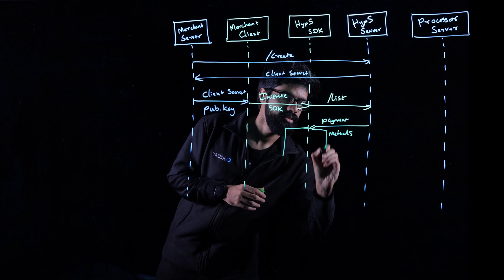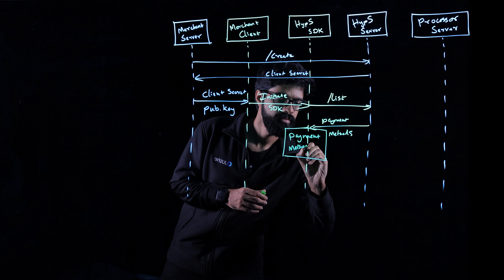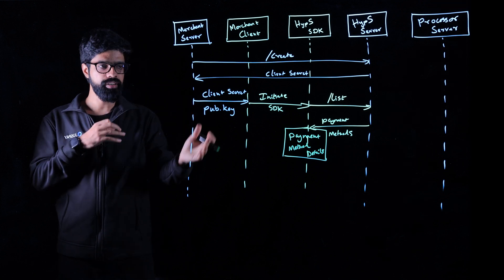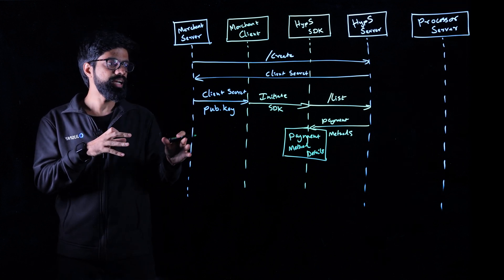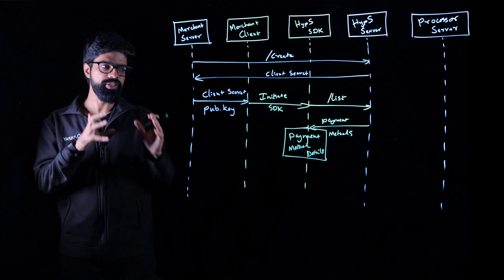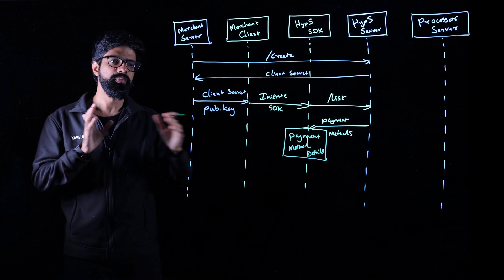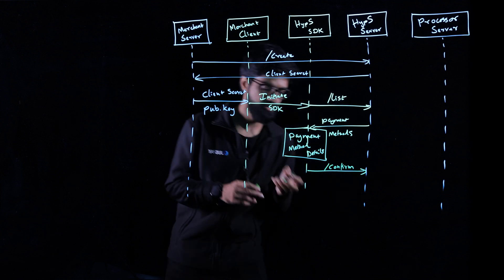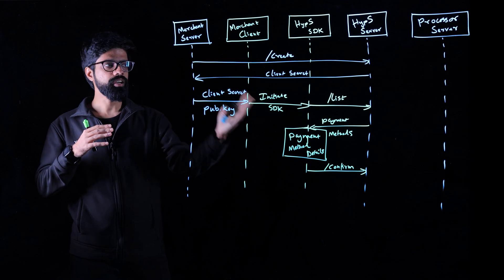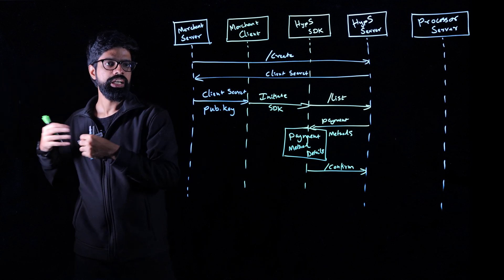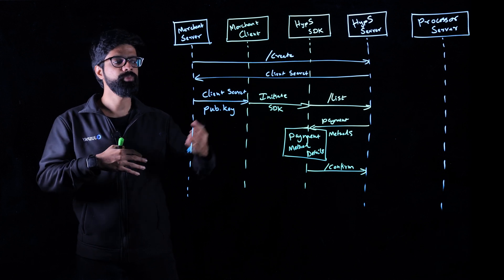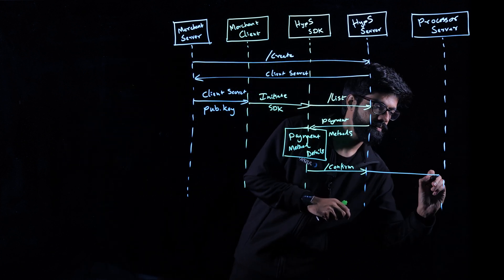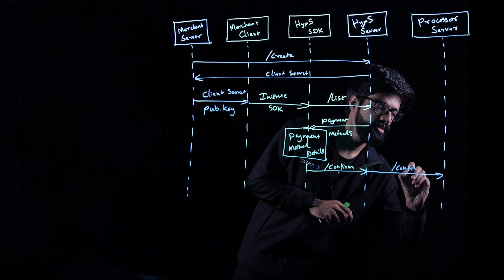At this point, your customer enters their payment method details — their card information or their bank information. Once they enter that, using the client secret and publishable key that you've received, the Hyperswitch SDK now makes a payment confirm call to the Hyperswitch server. Once the SDK makes the confirm call, the Hyperswitch server, based on your routing rules, decides which payment processor the transaction needs to be routed to and places a confirm call accordingly.